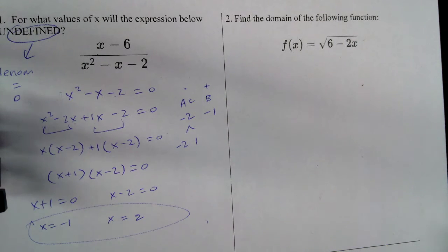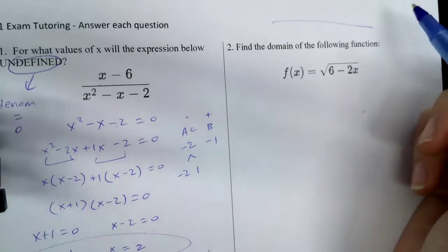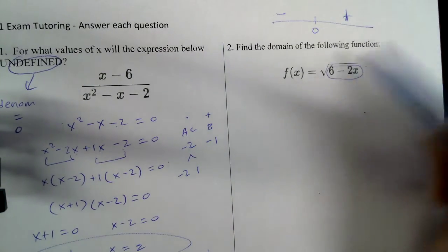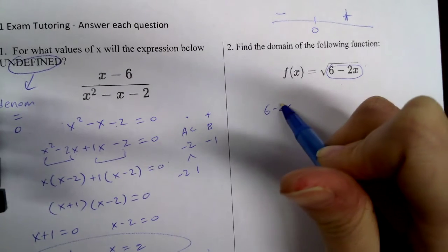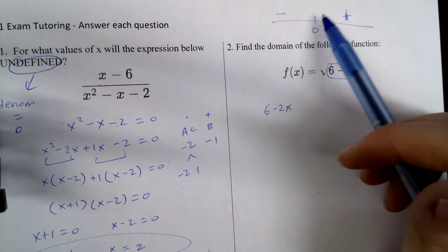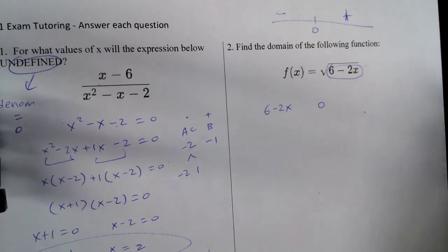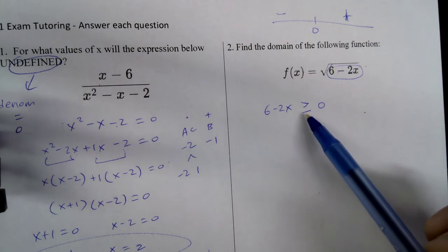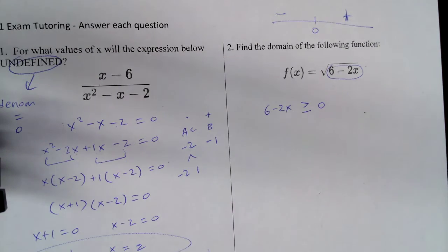Number 2, find the domain of the following function. Alright, the rule that you must remember is that when we have a square root, we cannot have a negative number under the square root. So if you think about the number line, and I have zero, this is the negative side, this is the positive side. This thing under the square root sign cannot be equal to the negative one, right? Negative numbers. So can it equal zero? Yes, it can. Can it be greater than zero? Yes, it can.